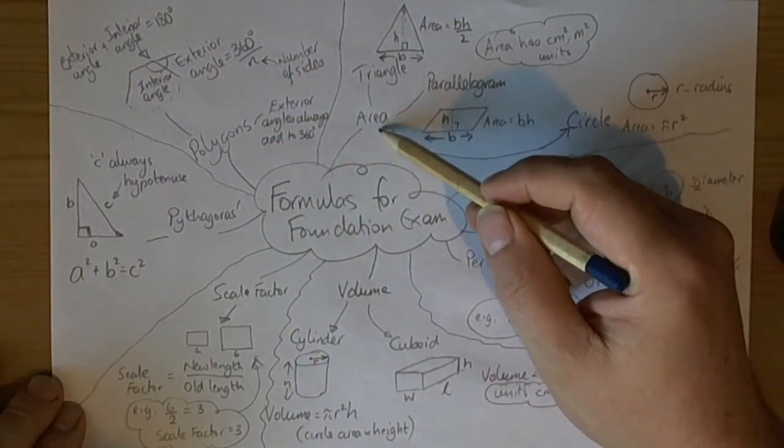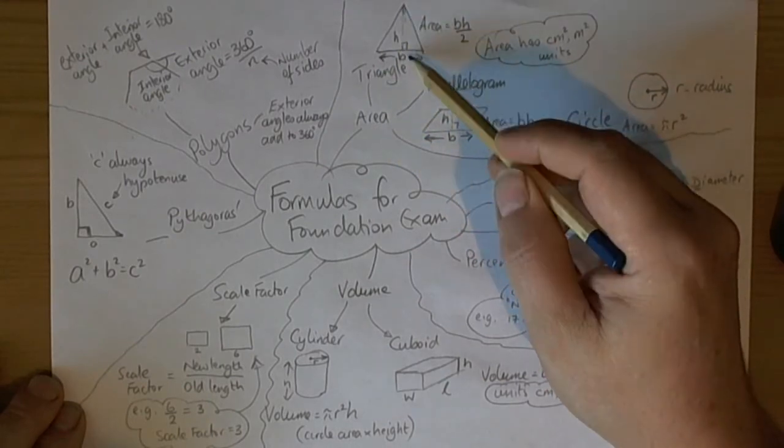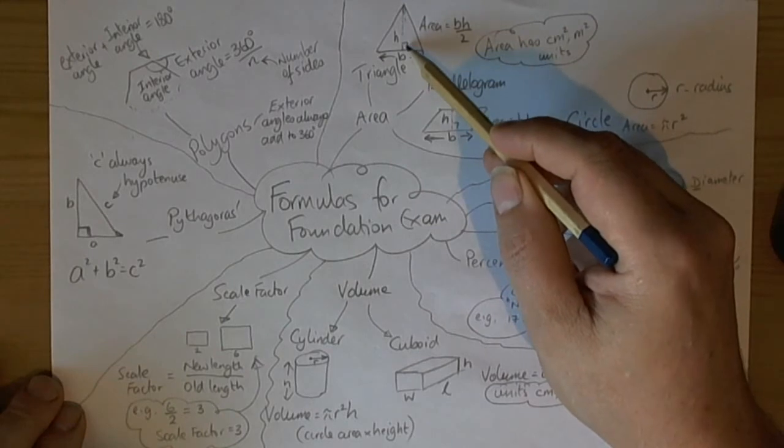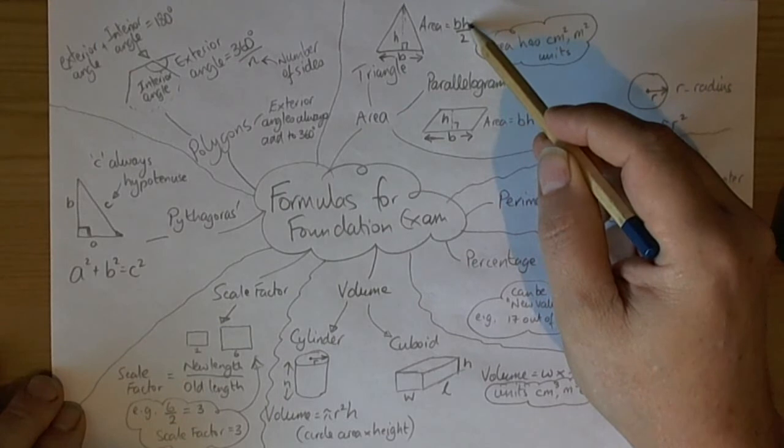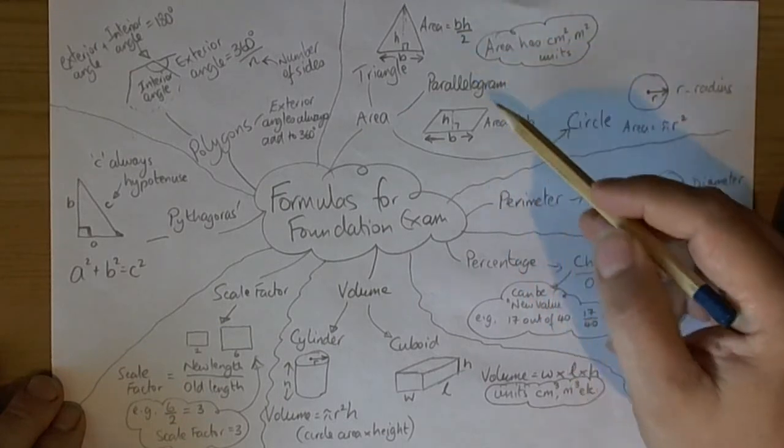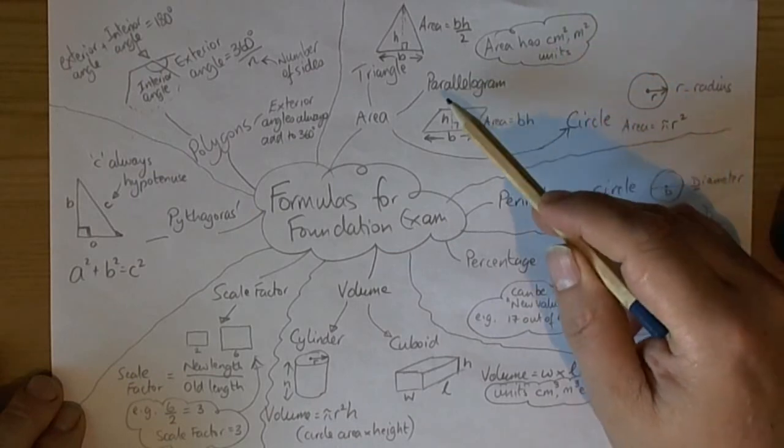For area formulas, we need to remember that a triangle is the base length times the perpendicular height, the angle at 90 degrees. It's base times perpendicular height divided by 2. Remember that area has square units, look for that.